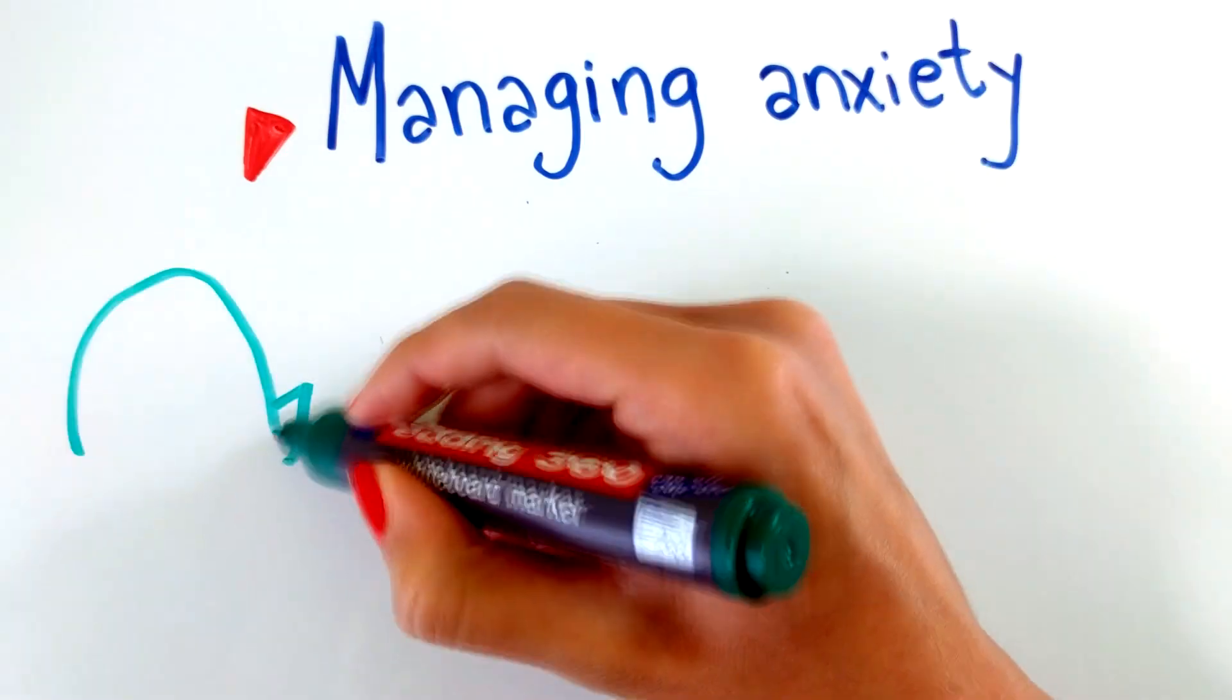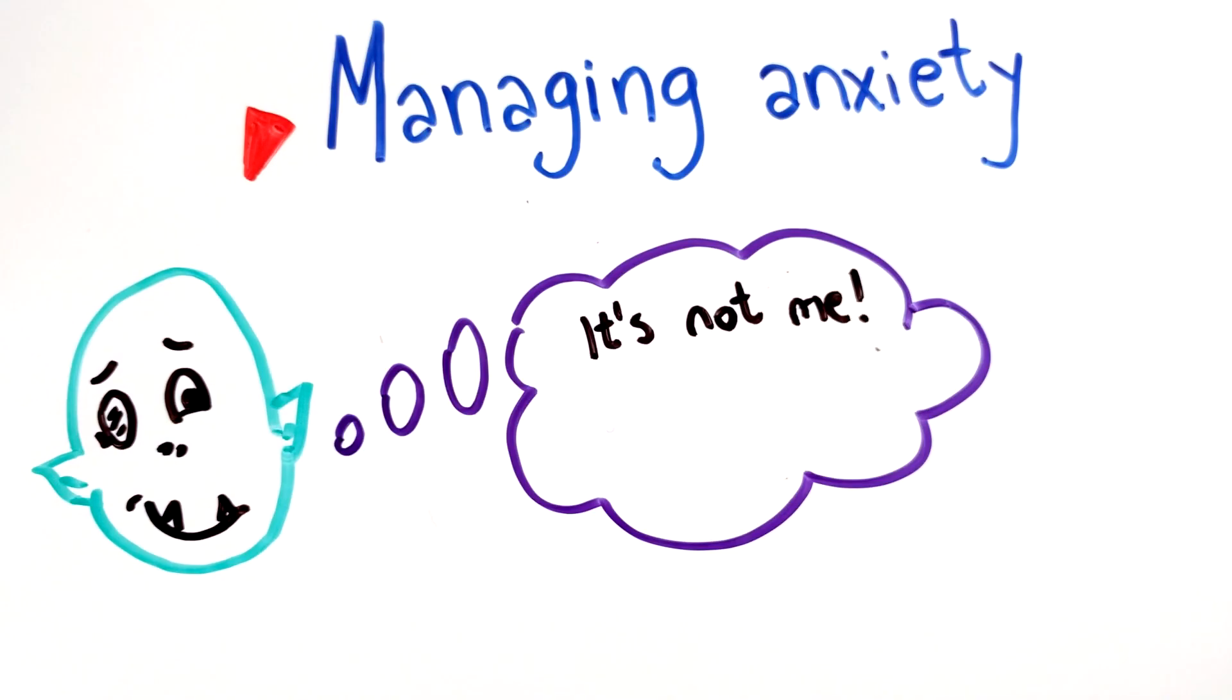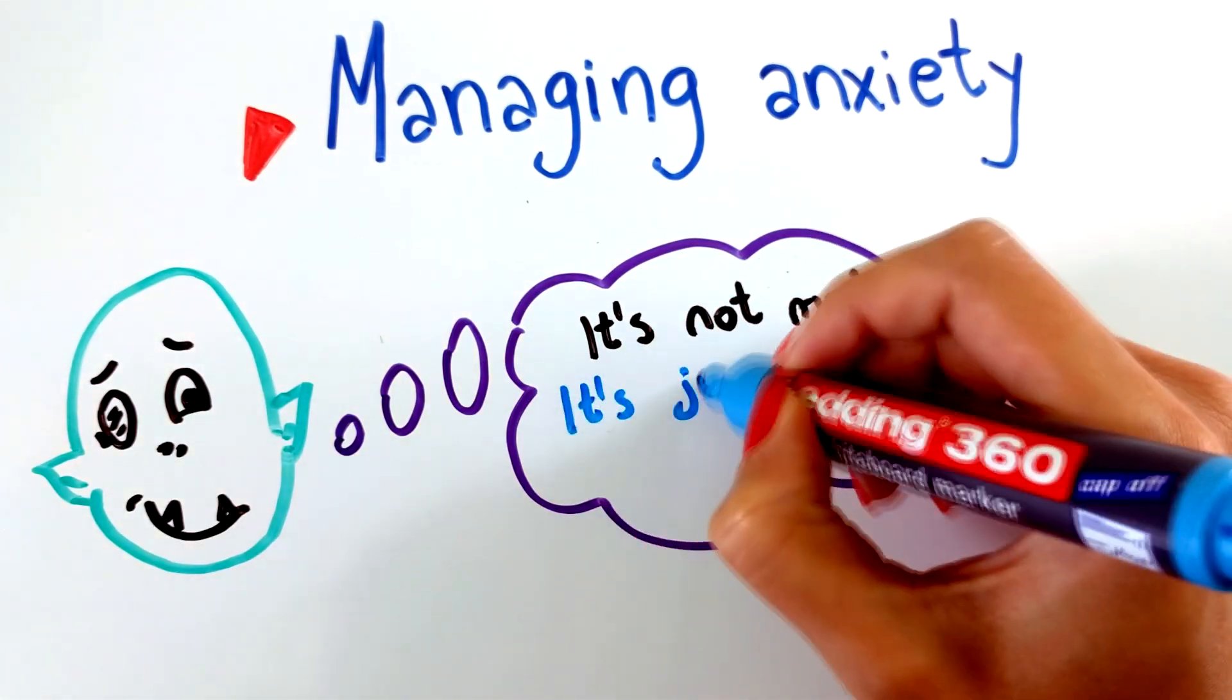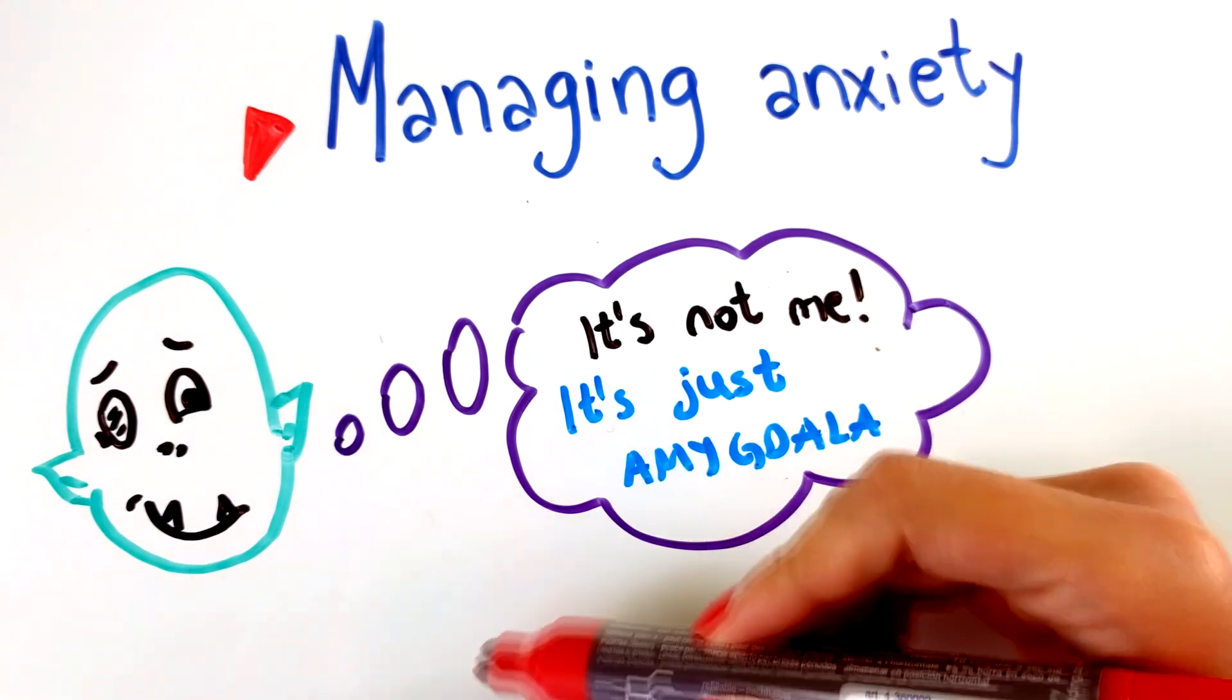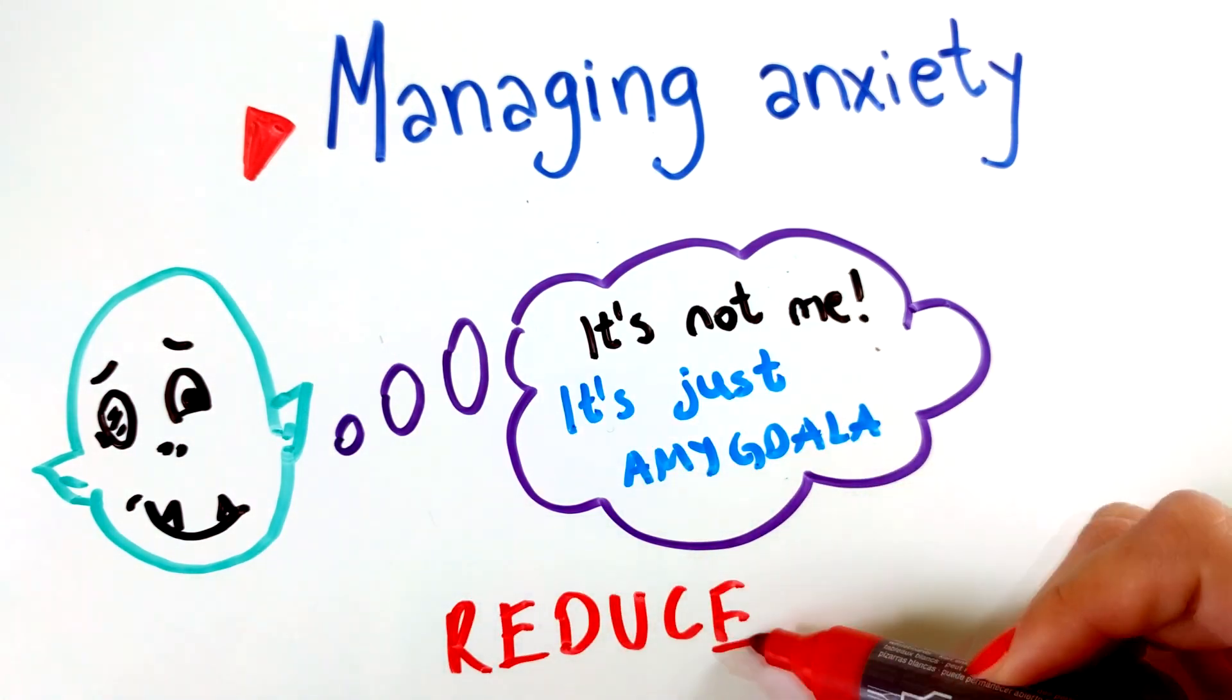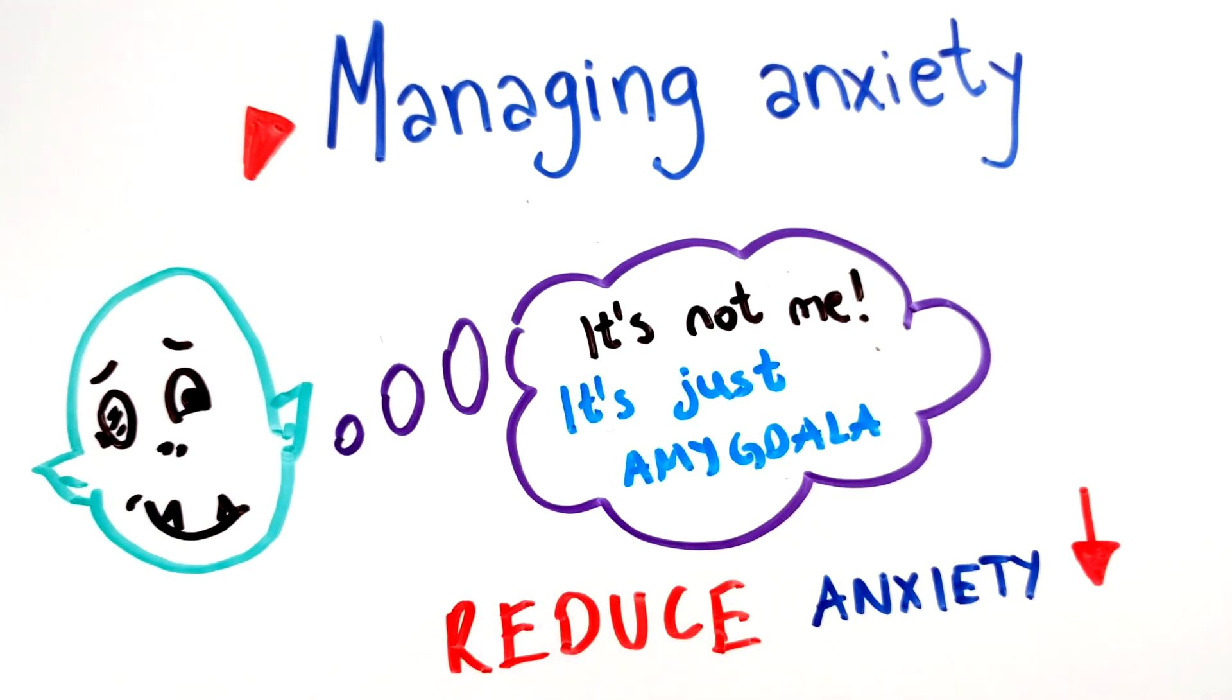Recognizing that it is your survival mechanism reacting and not you, the rational brain, is the first step to managing anxiety. Understanding that it is an independent emotional thinking system which acts without your permission will stop you from criticizing yourself and will help you reduce anxiety.